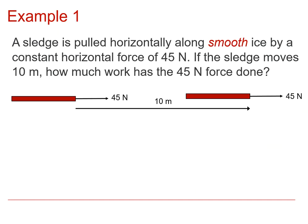So, when is work done? Well, work's done when something moves. So, here's an example. We have a sledge that is being pulled horizontally along a smooth surface, smooth ice, by a constant horizontal force of 45 newtons. Now, it's important to say that it's a smooth surface, because that means that that's then the only force that is acting horizontally.